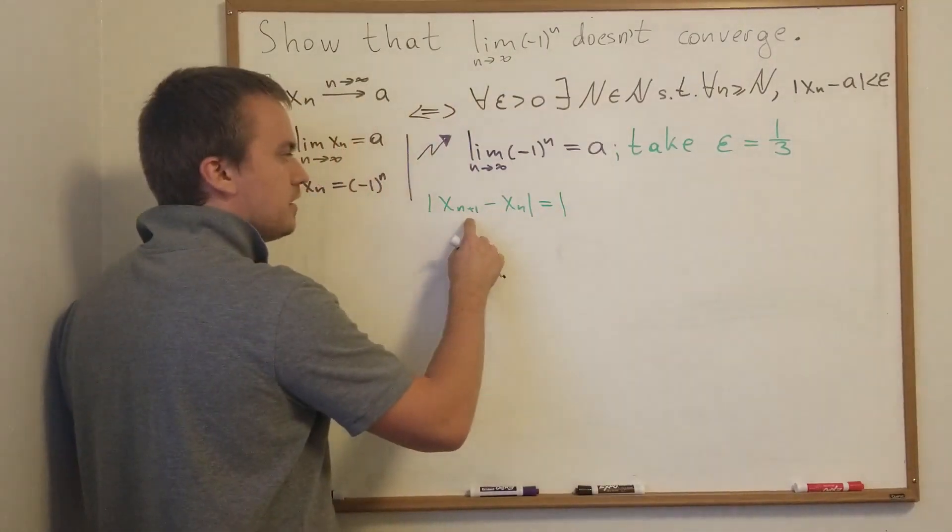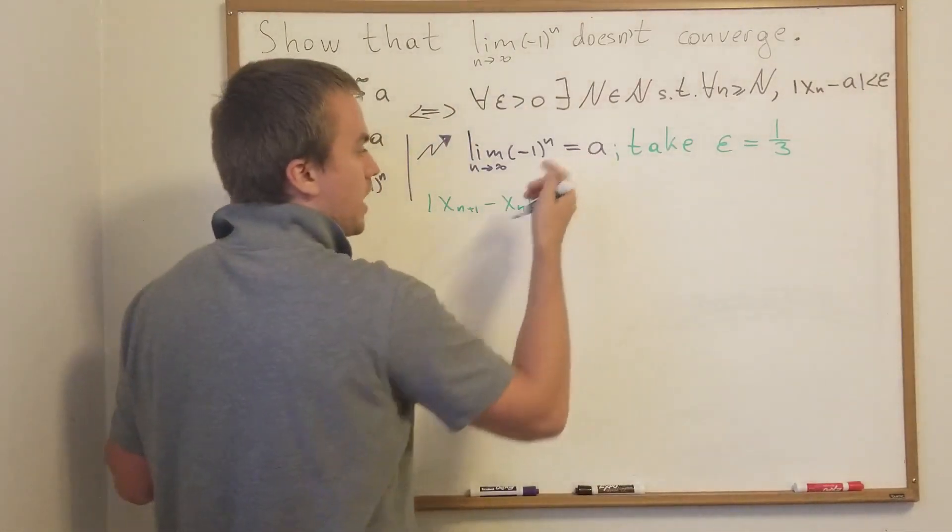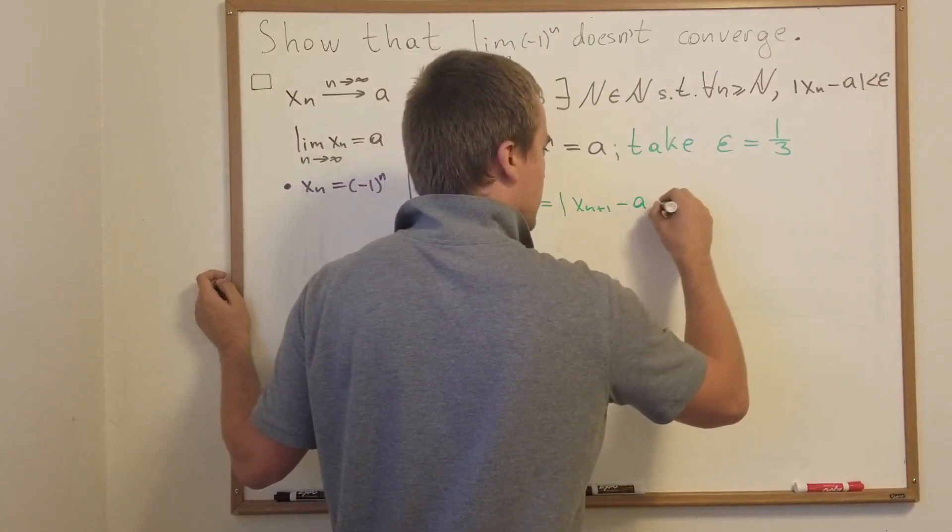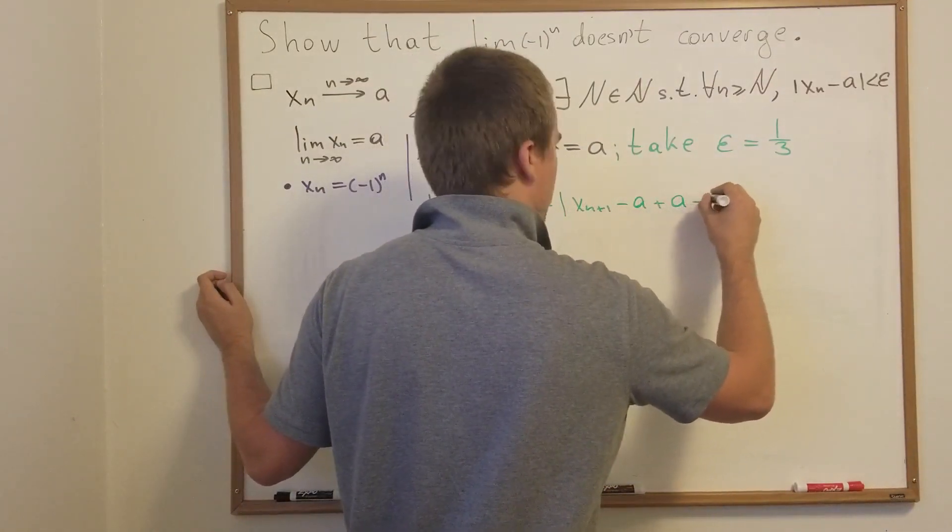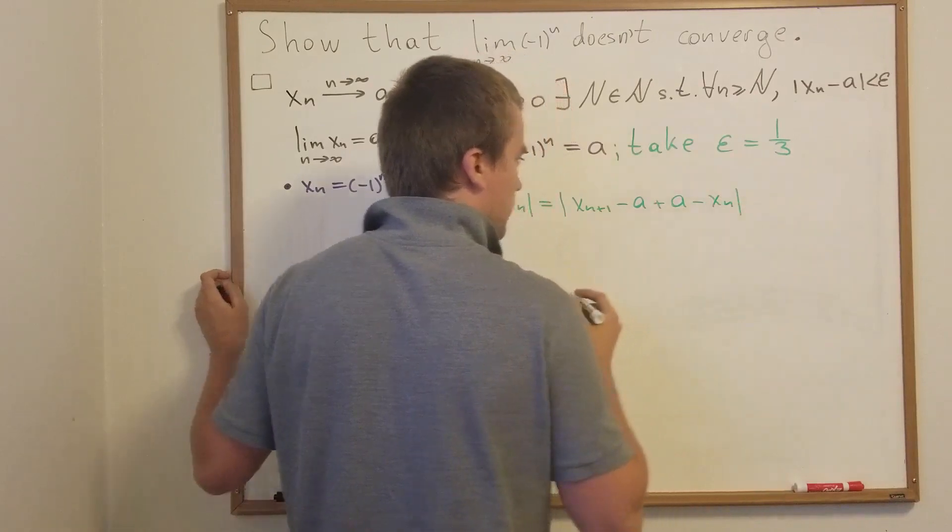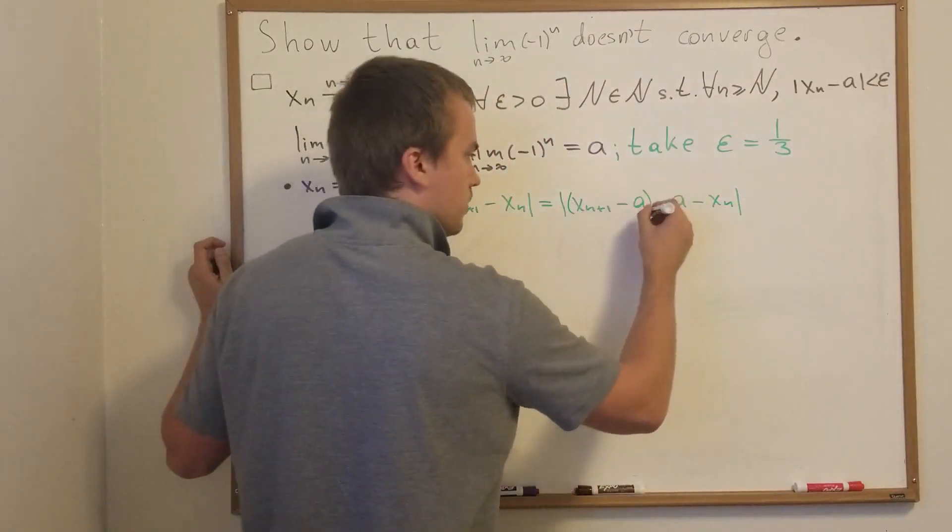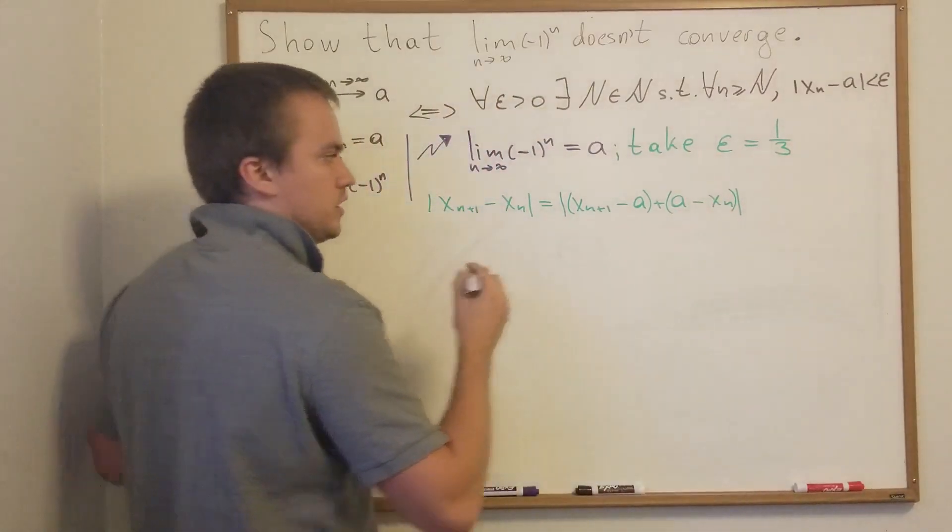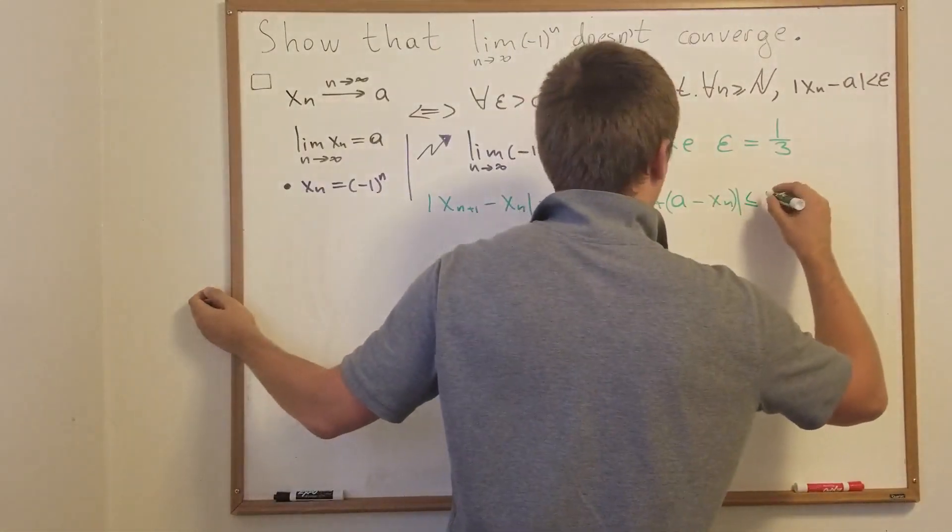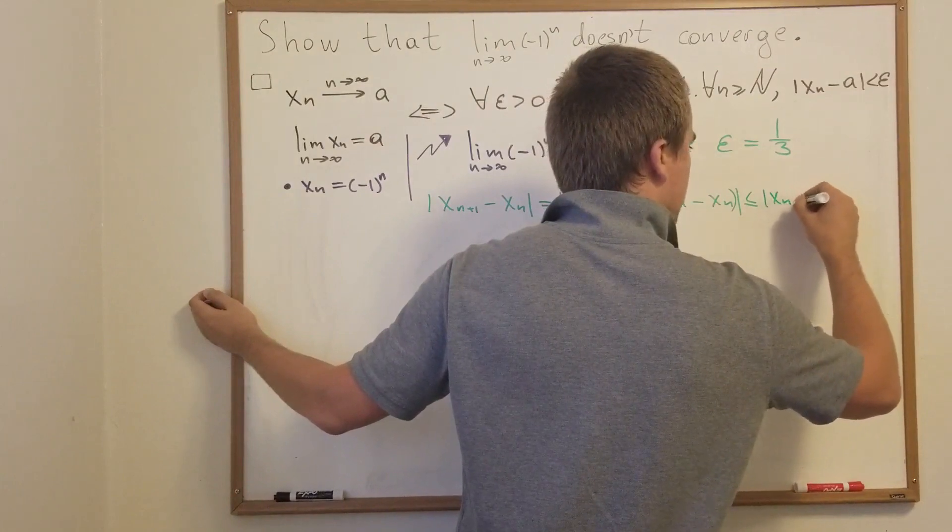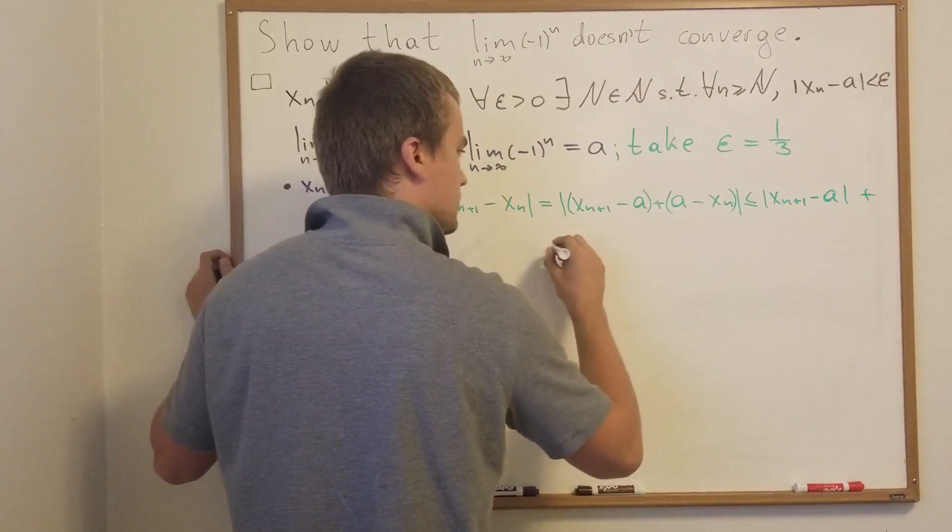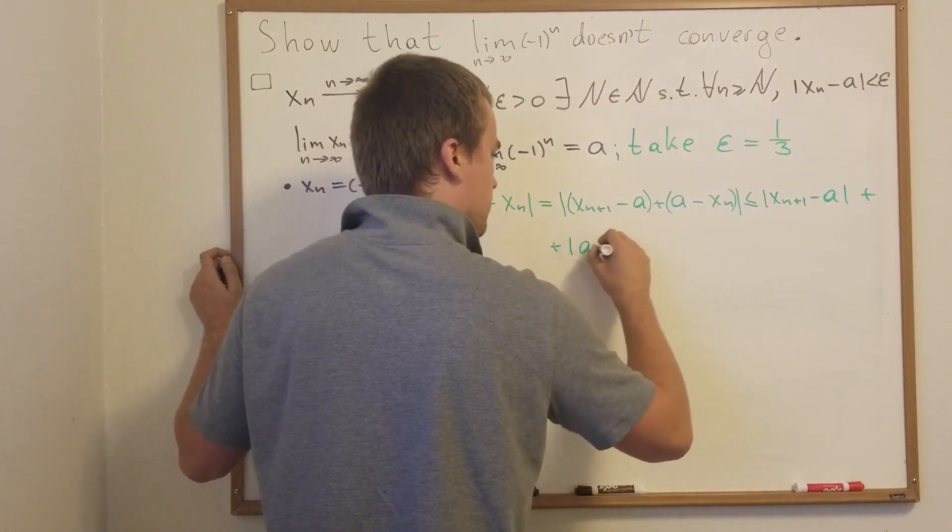We're going to add and subtract a, our limit. So we're going to have xn plus one minus a plus a minus xn. Here I'm going to group these terms and then I'm going to use the triangle inequality. So in other words, I will get xn plus one minus a plus a minus xn.